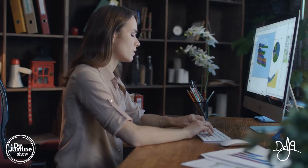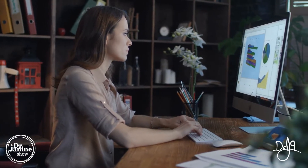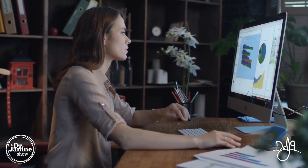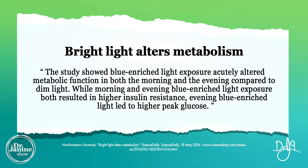If you have a lot of environmental exposure to artificial light — whether from your devices, television screens, computer screens, or the energy-efficient light bulbs in your home — this could be raising your blood glucose levels. In one study, both morning and evening blue light enriched exposure resulted in higher insulin resistance, but the evening blue light environment led to higher peak glucose levels.